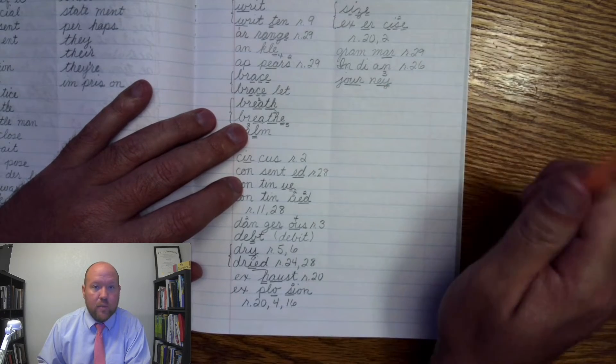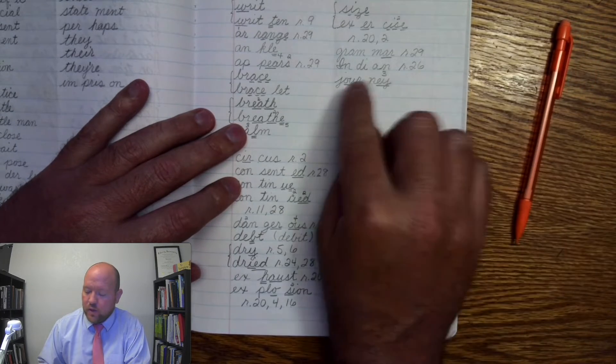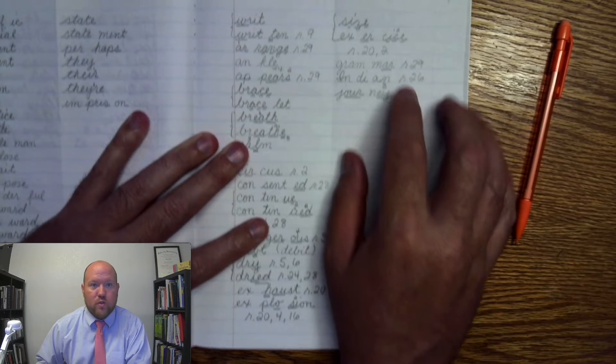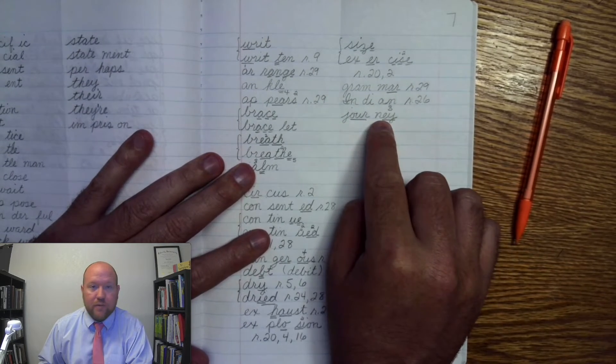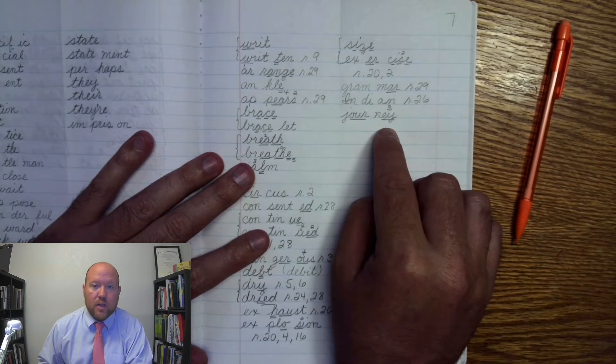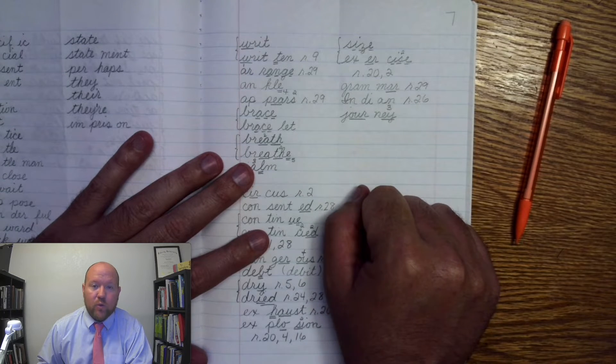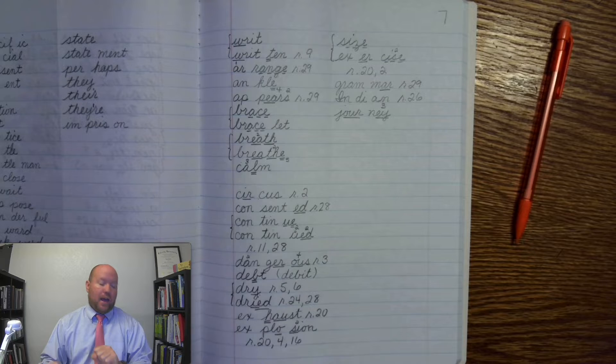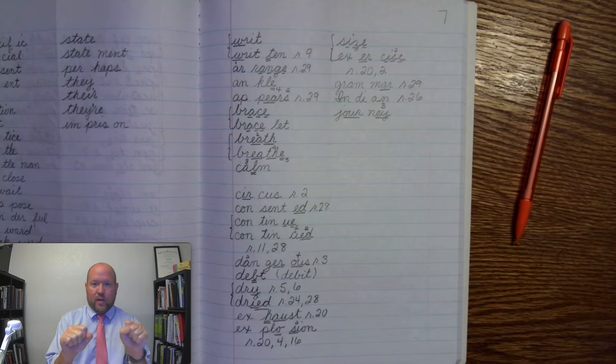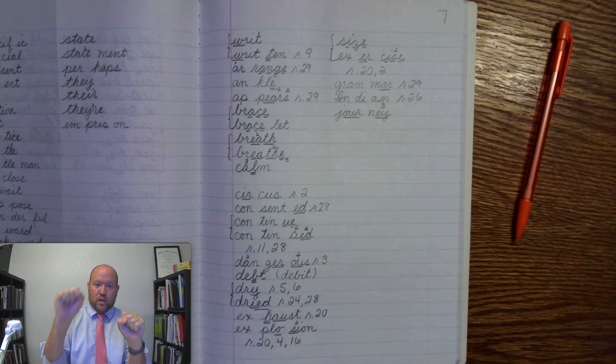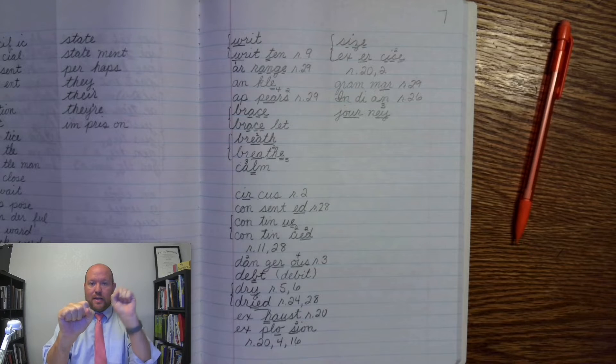All right. Now, the next word is going to use that same phonogram, and it is a journal. So, a journey is like if you go on a long trip, right? If you go explore different places, you're going on a journey. Now, when you go on a journey, you oftentimes want to write about that journey, and when you write about it, it's called a journal. Now, journal. Here we go. Journal. Base word journal.